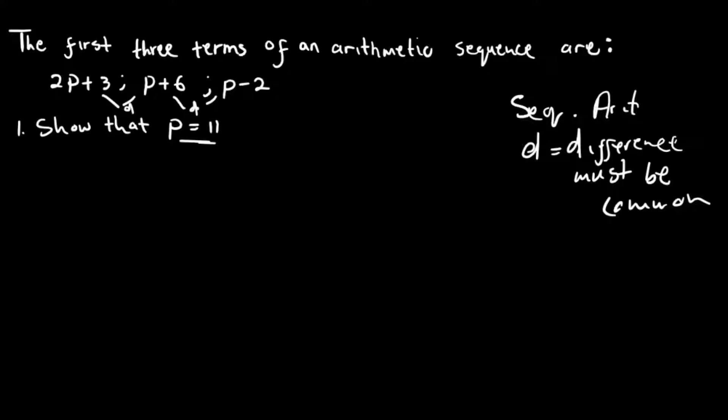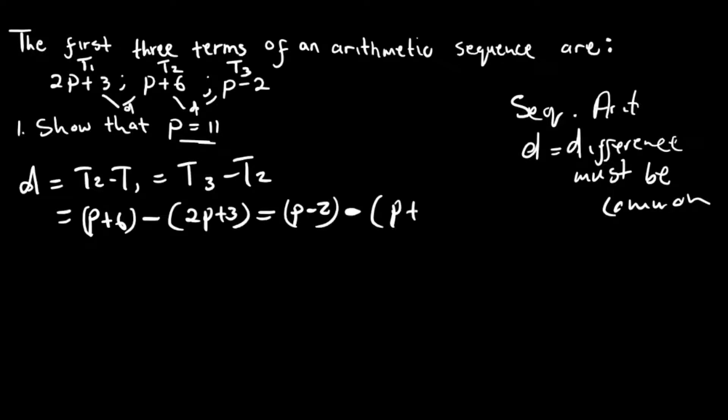So let's try it out. We have p plus 6, which is this one here, t2. So let me first study it nicely. We have t1, t2, and t3. So to find the difference, we need to say t2 minus t1 is equal to t3 minus t2. So t2 is equal to p plus 6 minus t1 is equal to 2p plus 3 is equal to t3, which is p minus 2 minus t2, which is p plus 6.